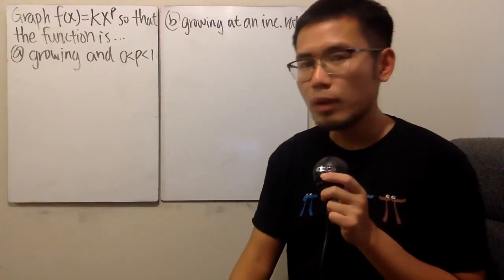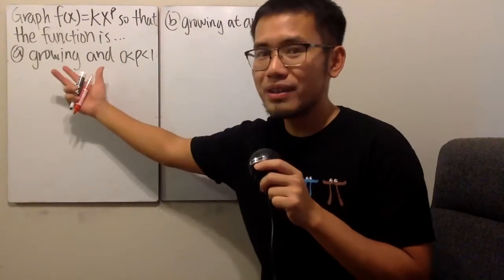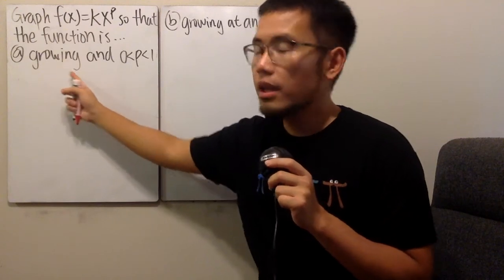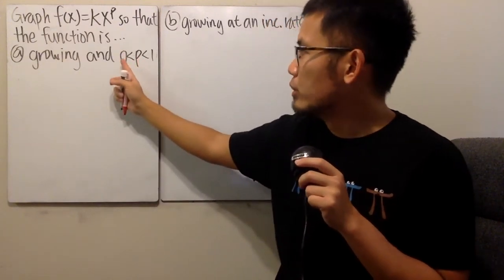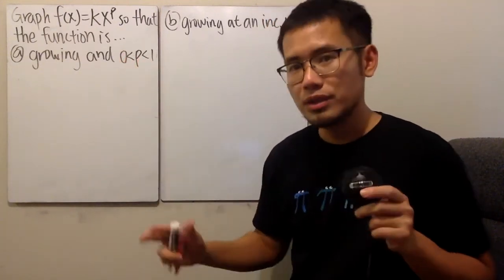Here we are going to make a graph of a power function. In the first part, we want the function to be growing and the value for P is between 0 and 1.